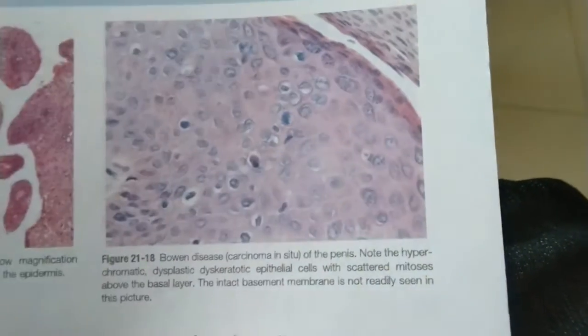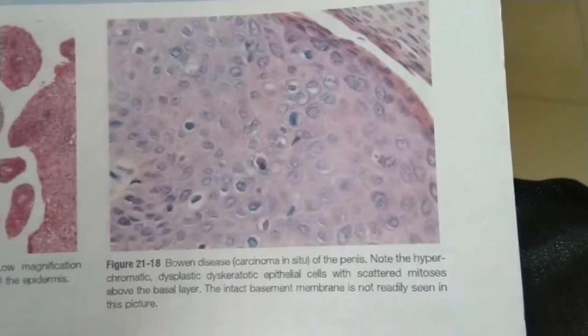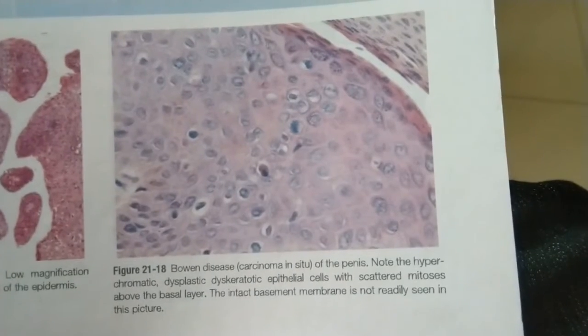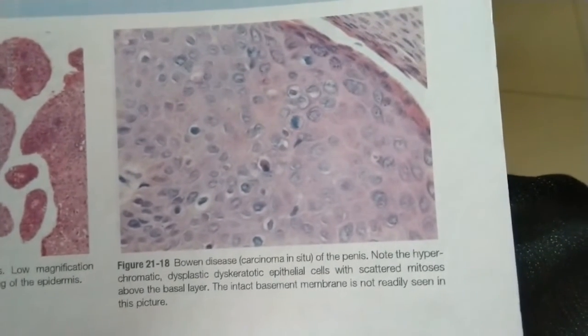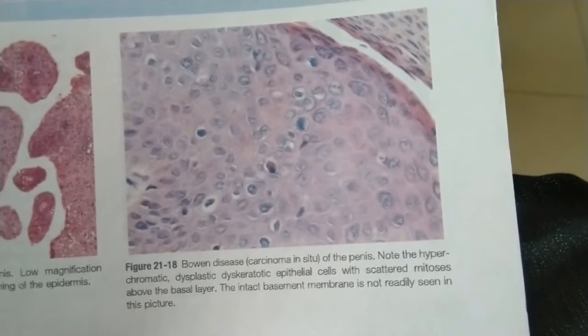The basement membrane is intact in these cells, so this is carcinoma in situ of the penis — that is Bowen's disease. Thank you for watching.